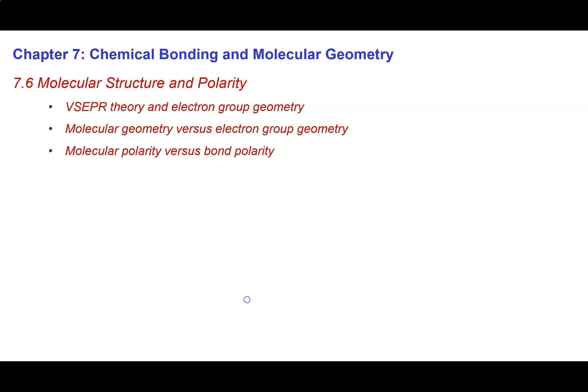In section 7.6 we do something very interesting. We take the Lewis structures that we've been developing for covalent molecules and we apply a very simple theory called VSEPR theory, and that's going to allow us to determine the geometry of our atoms in three-dimensional space. I've broken this section into three parts, and in the first part we're going to look at the basics of VSEPR theory and how that's related to electron group geometry.